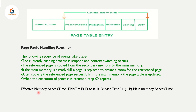We calculate the Effective Memory Access Time. The probability of a page fault is P. The equation is: Effective Memory Access Time = P × Page Fault Service Time + (1 - P) × Main Memory Access Time. As page faults increase, the access time increases and the system slows down.